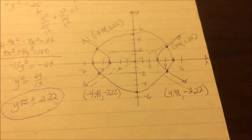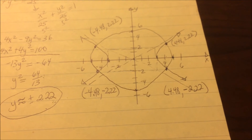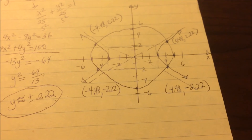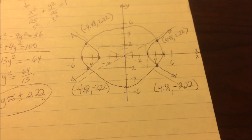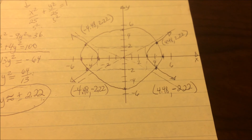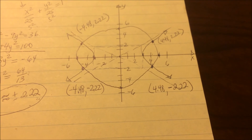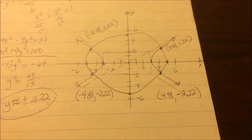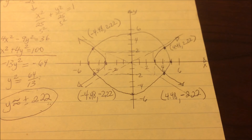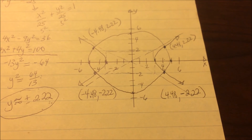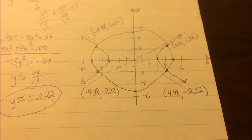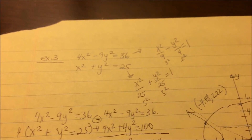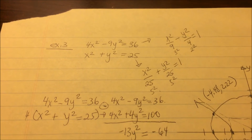So those are your four solutions. You can have 1 solution, no solution, 2 solutions, or 4 solutions — with a circle and hyperbola together, you'll typically get 4. Now go ahead and try the MyMathLab assignment.